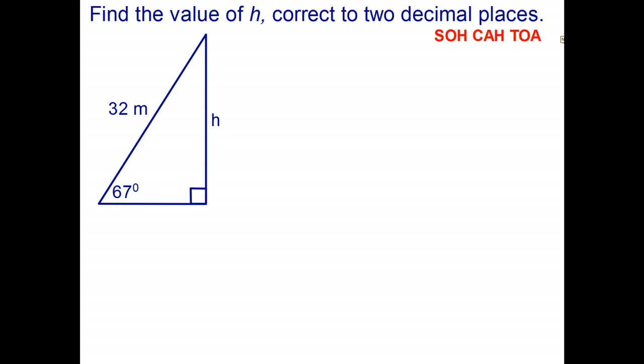Have a look at this question here please. We have a right angle triangle. What we know is one of the angles is 67 degrees and the hypotenuse is 32 meters, and what we're trying to find is the length of the vertical side. So how do we use trigonometry to find the length of h without having to actually measure it?